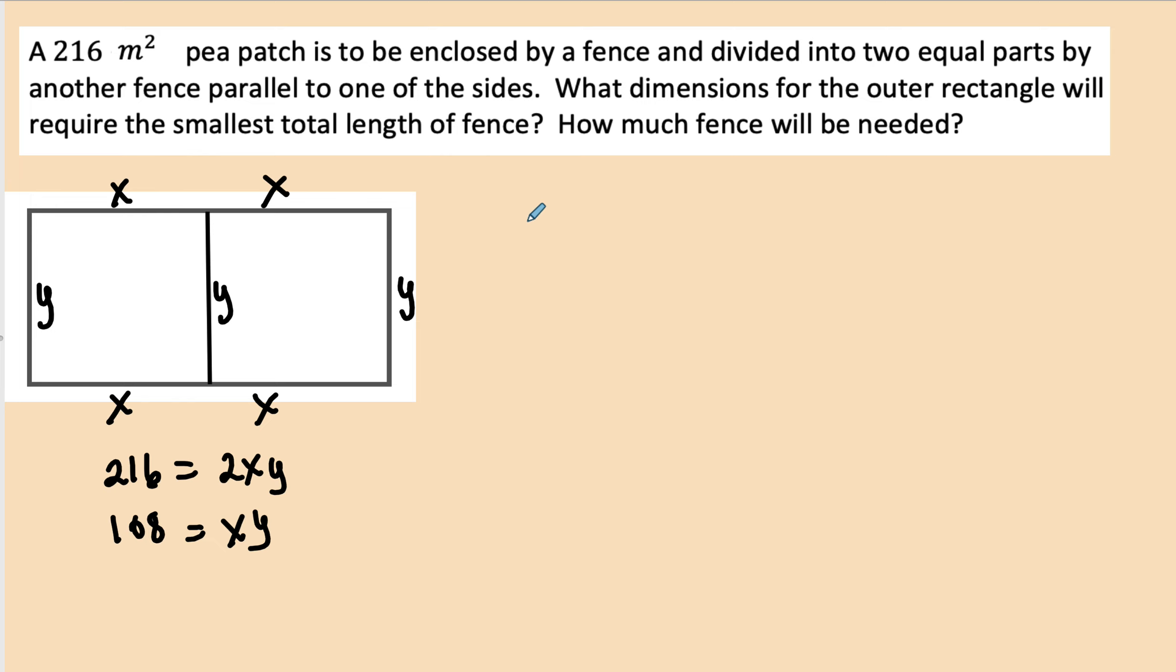Now we're looking for the dimensions of the perimeter, all the fence here. So I'm going to call that perimeter. I want to add up all of the pieces of fence. So that'll be 4x + 3y. And I'm going to substitute for y. And I'm going to substitute 3 times, and I'm going to solve for y here, and that'll be 108/x. So this will be 108/x. And now I have an equation in one variable. And that's 324/x.